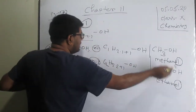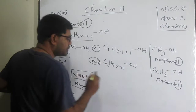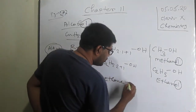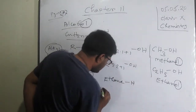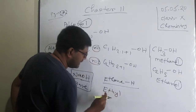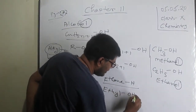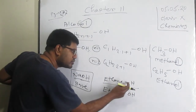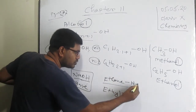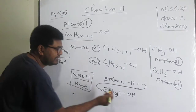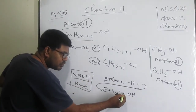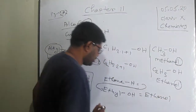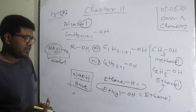The last two letters '-ol' come from 'alcohol'. For example, take ethane. If we remove one hydrogen from ethane, we get ethyl. When OH is attached with ethyl — note this is not a minus sign, it means one hydrogen is removed — then ethanol is produced.